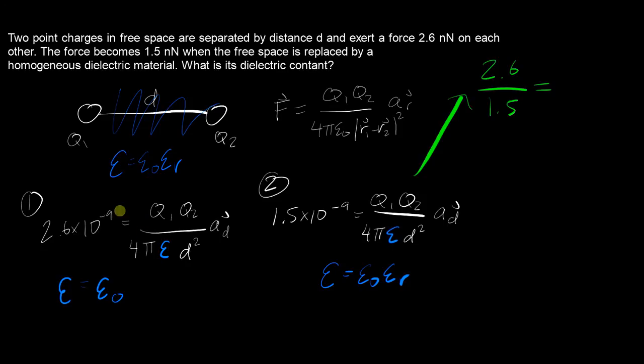the left hand equation for case one here, when you divide the right hand side of these equations, q1 q2 will cancel and so will 4 pi d squared and ad, and you'll be left with these different epsilons.